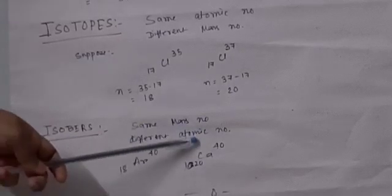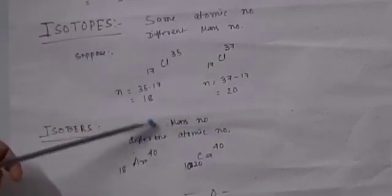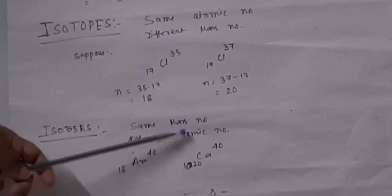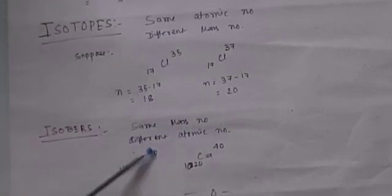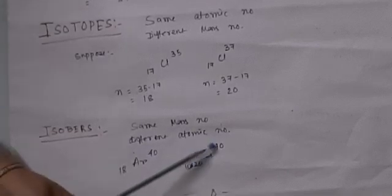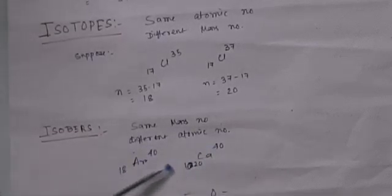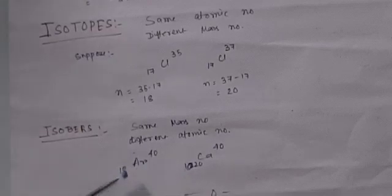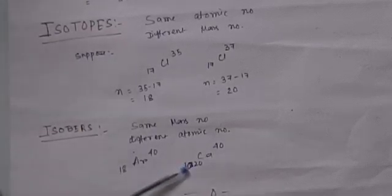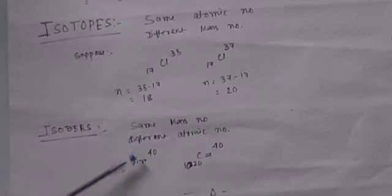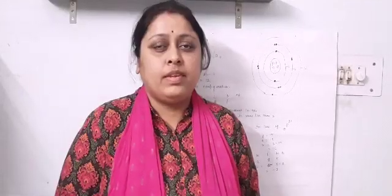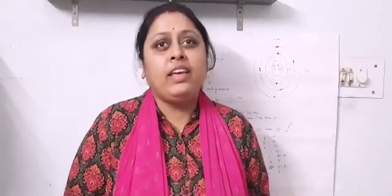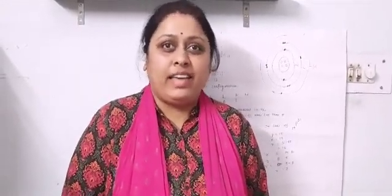Next is isobars. Isobars are elements having the same mass number but different atomic numbers — just opposite to isotopes. Example: argon 18/40 and calcium 20/40. These are different elements, so we can see 18 and 20 are different atomic numbers, but their mass number is 40 for both argon and calcium. That's all for today, and I'll explain more in the next class. Thank you.